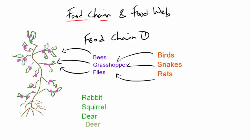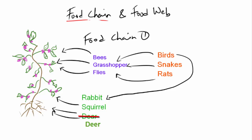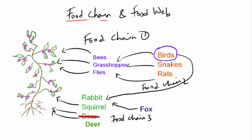Now within the same ecosystem, let's introduce more species like rabbit, squirrel, and deer who feed on plants and trees. Some birds eat rabbit and squirrel, and animals like fox also eat rabbit and squirrel — here we see another food chain. Between these two food chains, you will find some interlinkage wherein one species of animal is dependent on both food chains. This interlinkage of food chains is called a food web.